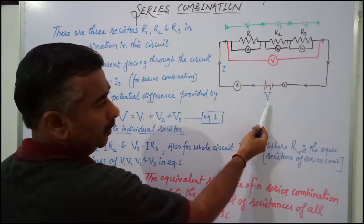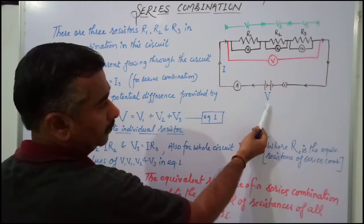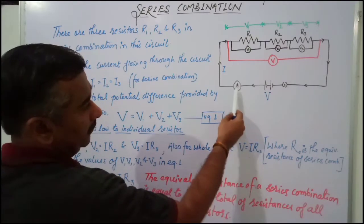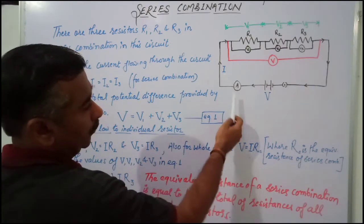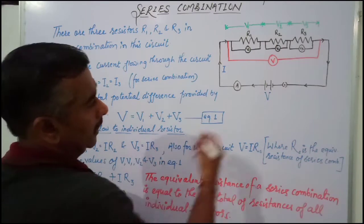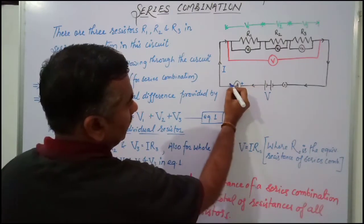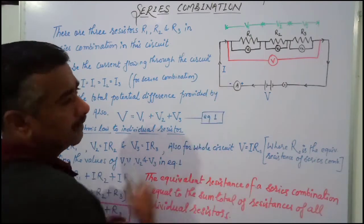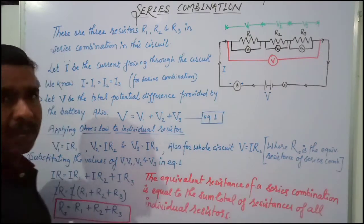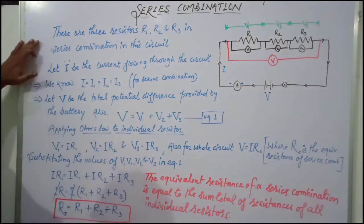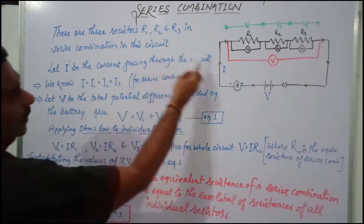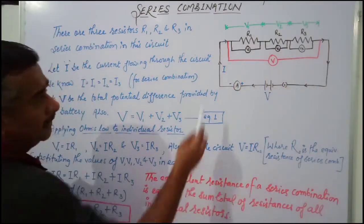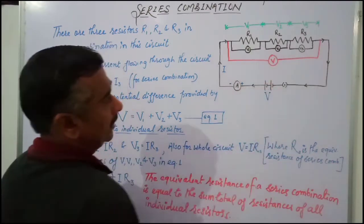The battery gives a total potential difference of V volts. When we switch on, there is a current which flows, measured by the ammeter. The amount of current flowing is I. The three resistors R1, R2, and R3 are connected end to end, and there is a single path for the flow of electric current — that means it is a series combination.